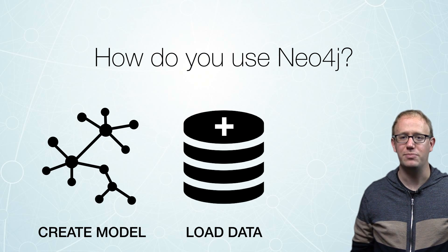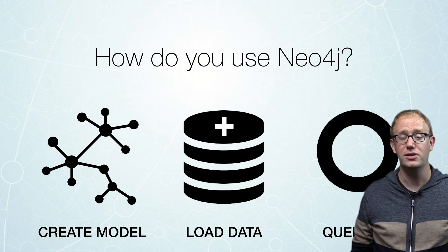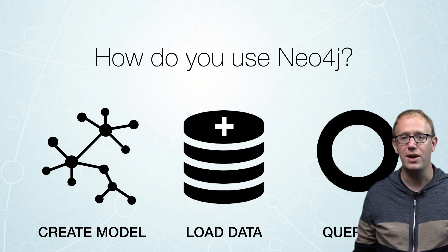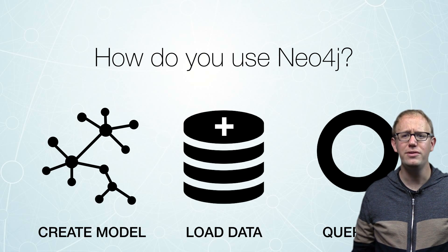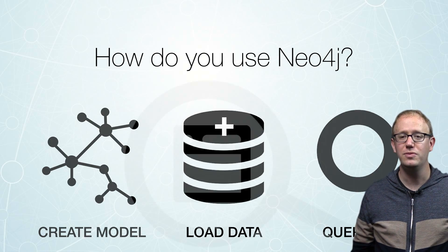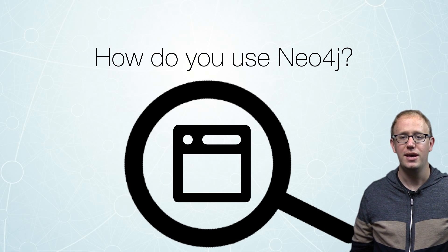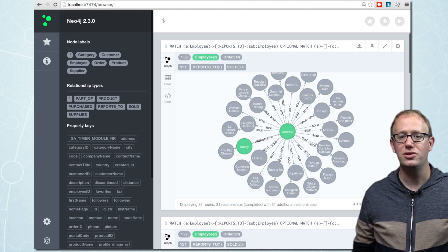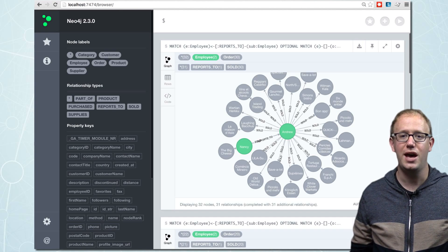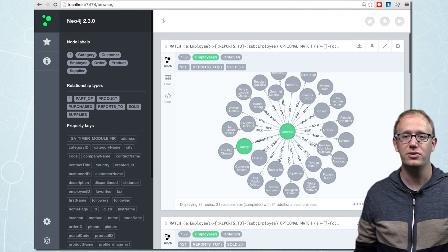The third step to using Neo4j is querying it. That's why you're using a graph database — to be able to run queries in an efficient way, in an intuitive way, across your data. Neo4j comes with a built-in web application that allows you to query your data and see the results either in a graph form or in a tabular form, and allows you to store your favorite queries and otherwise explore your data.